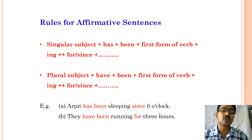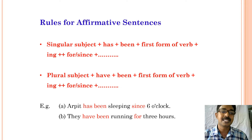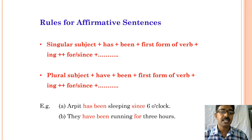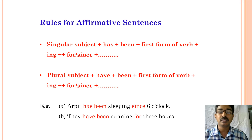Now let us see the rules for affirmative sentences in present perfect continuous tense. The structure is: singular subject plus has plus been plus first form of the verb plus -ing plus since or for plus object. Or plural subject plus have plus been plus first form of the verb plus -ing plus for or since plus object. Examples: Apreet has been sleeping since 6 o'clock. They have been running for 3 hours.